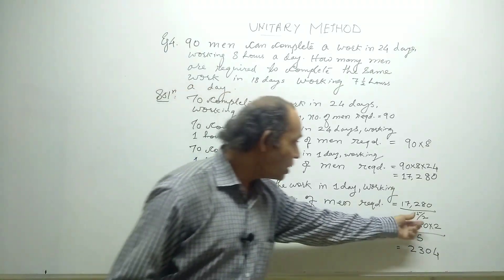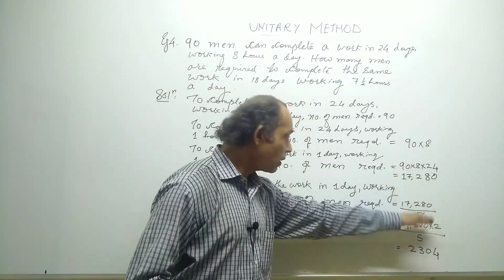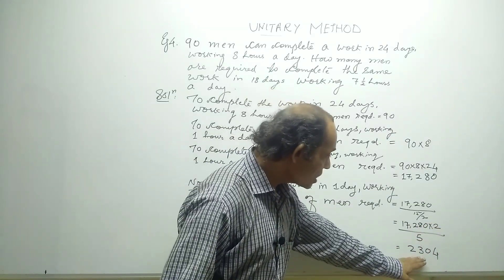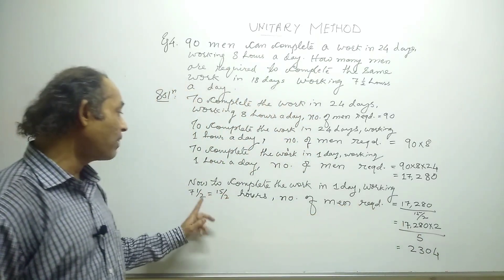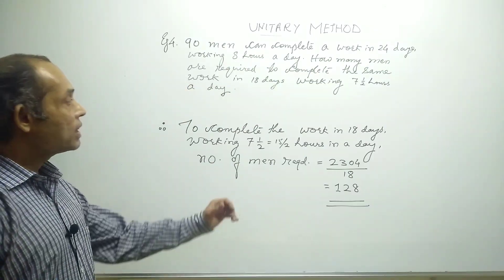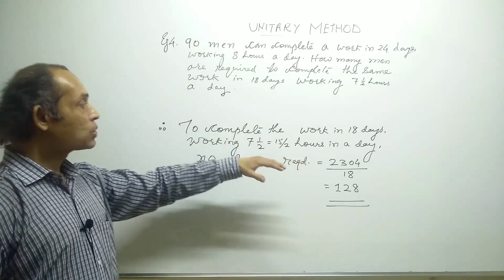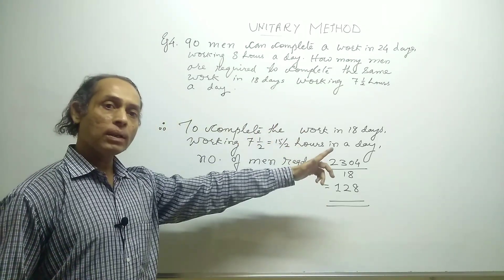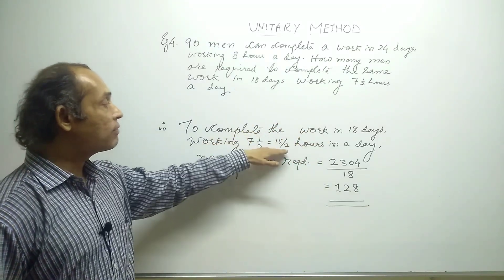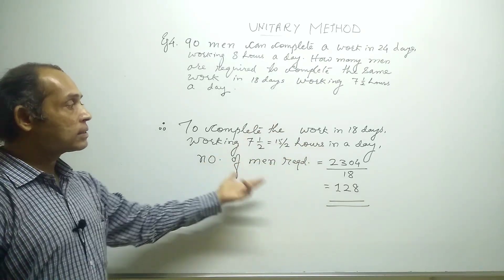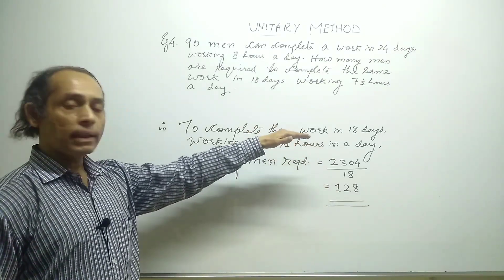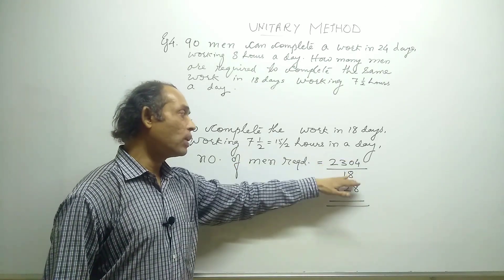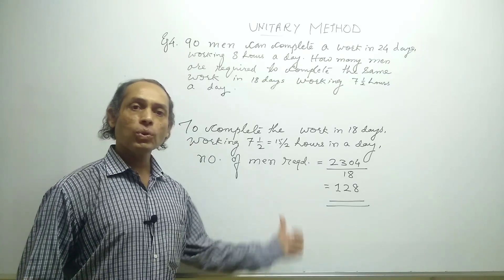When dividing by 15 by 2, we take the reciprocal, giving 17,280 multiplied by 2 divided by 15, which equals 2,304 men. Since we gave more time, fewer men are required. Finally, to complete the work in 18 days — again increasing the time — we divide: 2,304 divided by 18, giving a final answer of 128 men.